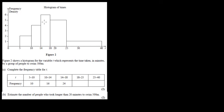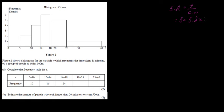We have a histogram. The x-axis is t, time, and the y-axis is the frequency density — the height. Remember, this is the frequency density, not the frequency. From the histogram, we have to read the information and fill up the table. We have to find the frequency. Remember, frequency density equals frequency divided by class width, which makes frequency — the area — equal to frequency density times class width.